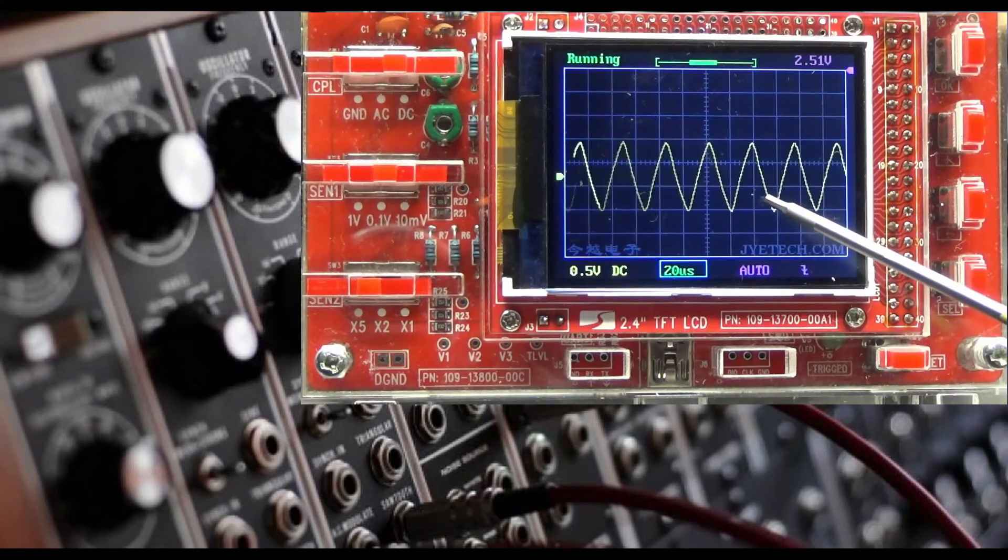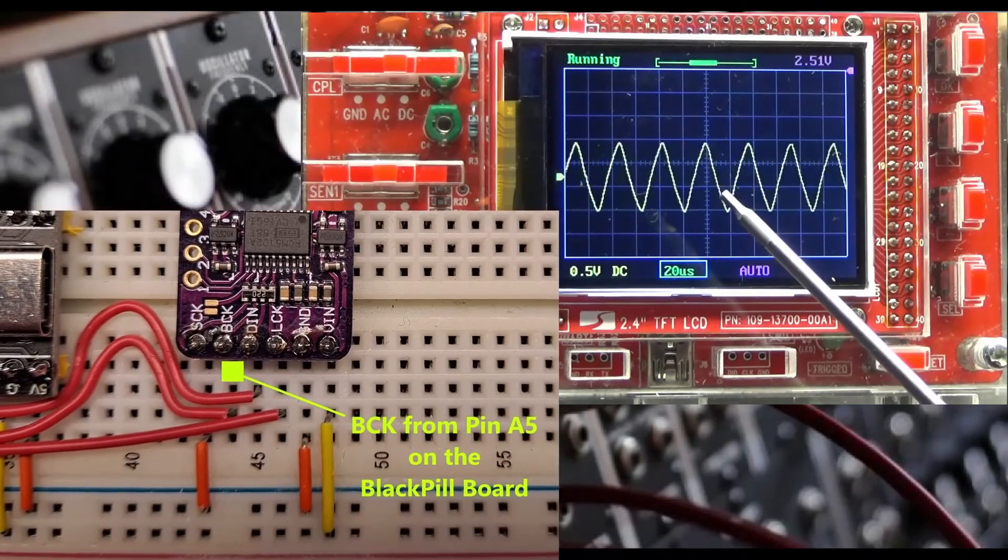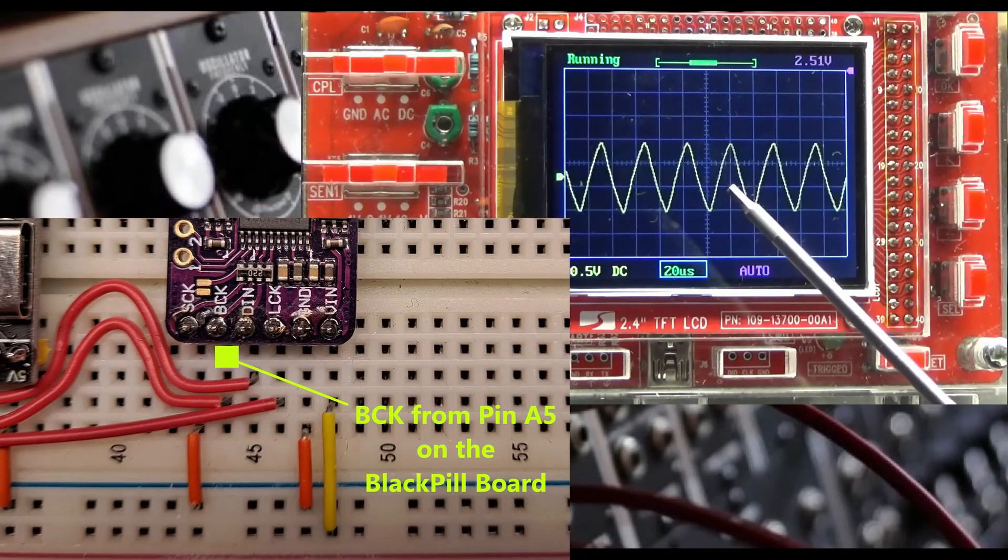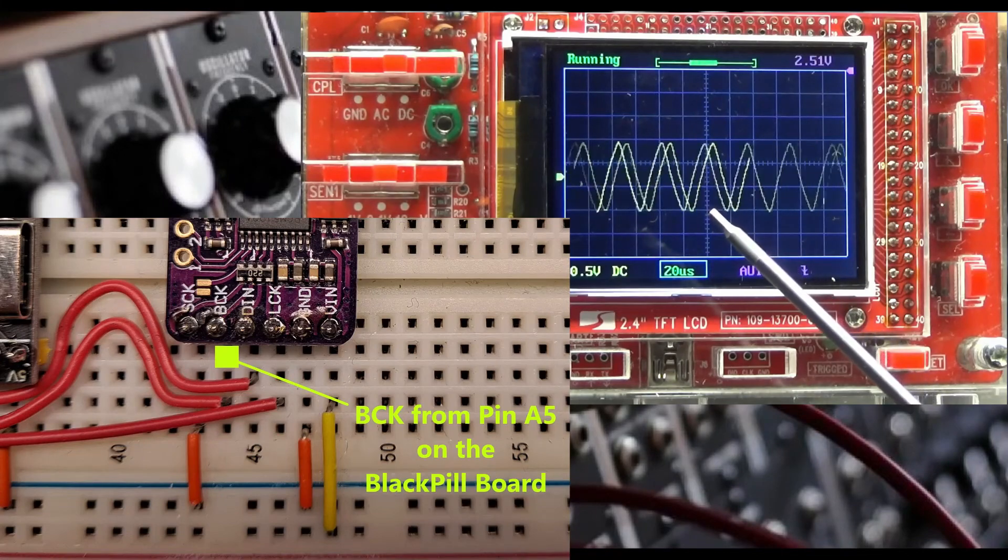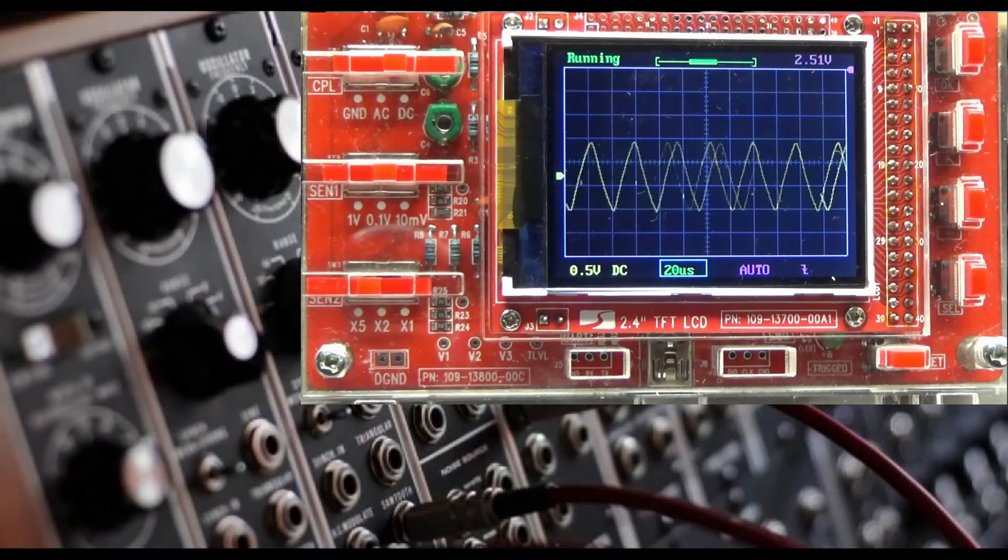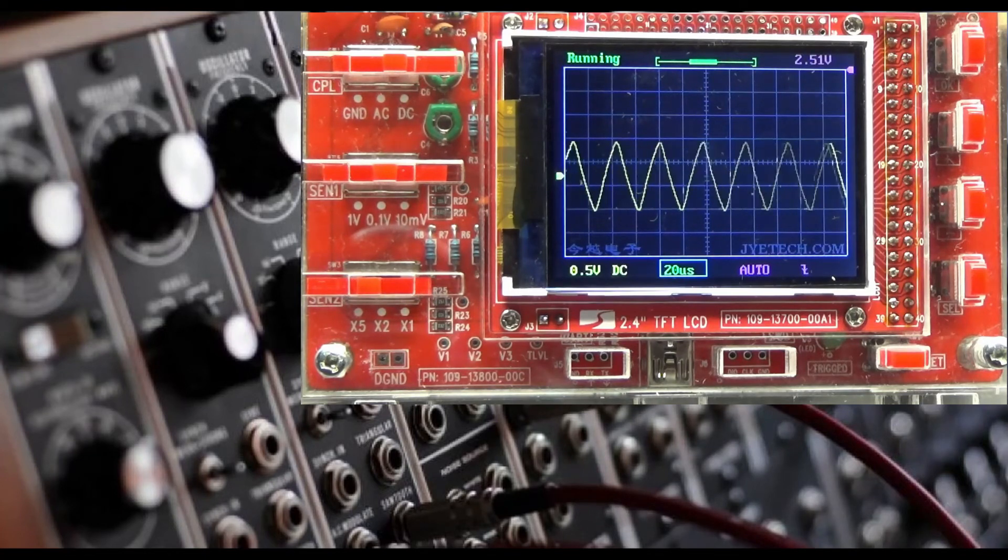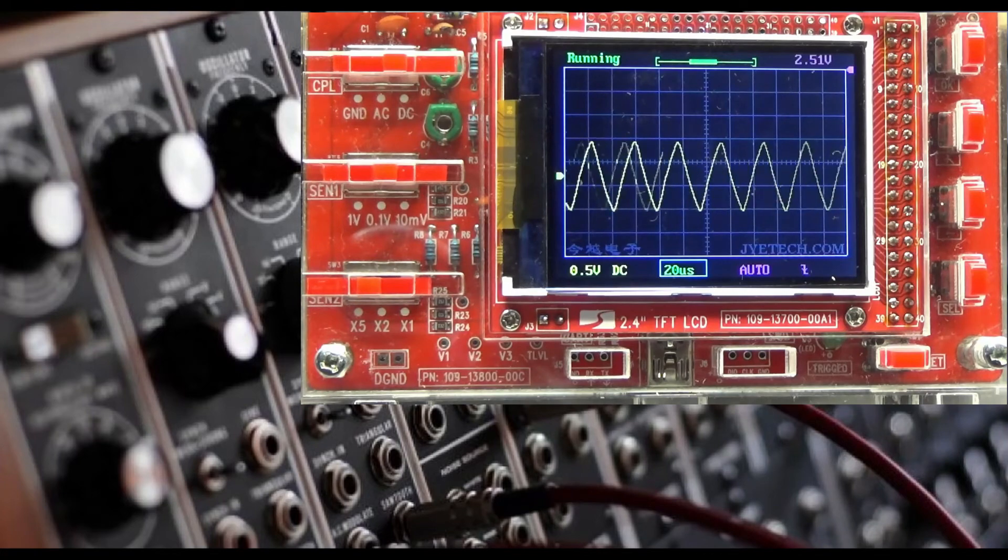Since we can see the signal on pin A5, we can move our test lead from pin A5 on the black pill board over to the BCK pin on the digital analog converter board. Let's do that now. And here we see the signal again. So this confirms that we are indeed getting the same signal on each end of the wire that goes from the black pill board to the digital analog converter module.